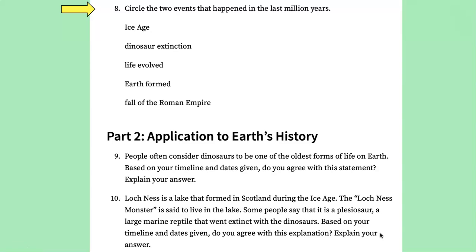And then just to kind of emphasize it, what are the two events that happened in the last million years? The Ice Age and the fall of the Roman Empire. Now of course the fall of the Roman Empire was much more recent, but both of these events are much much younger than the other three listed here.